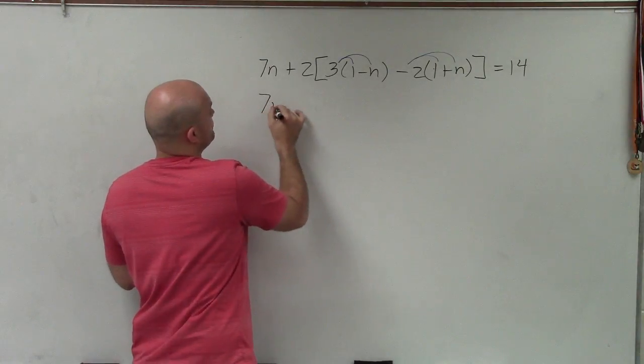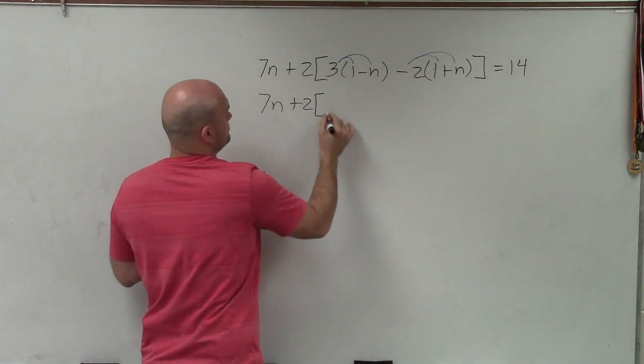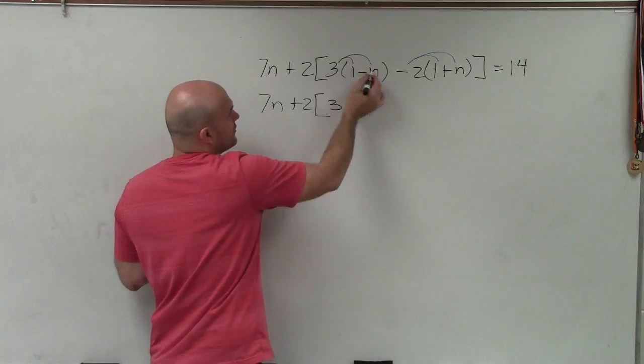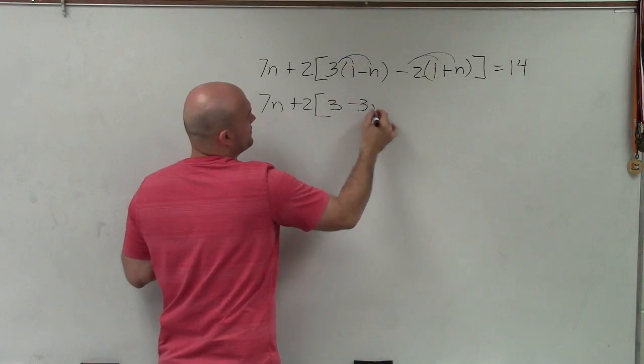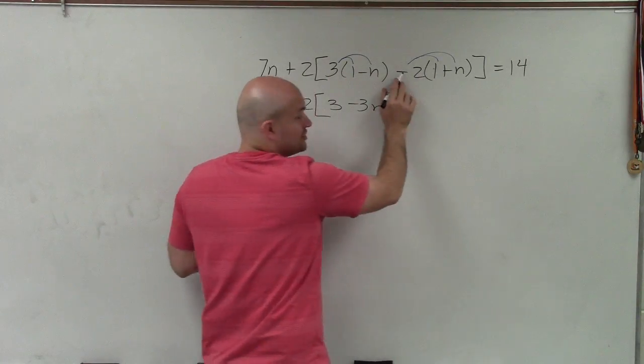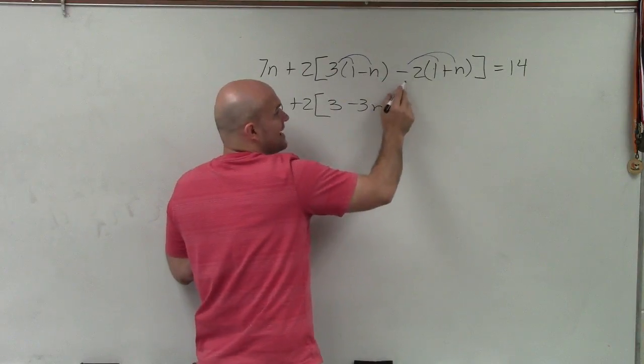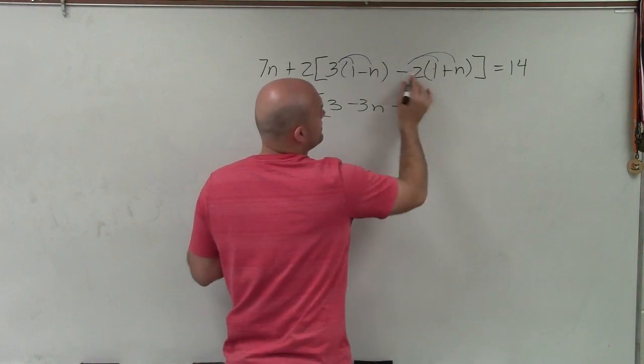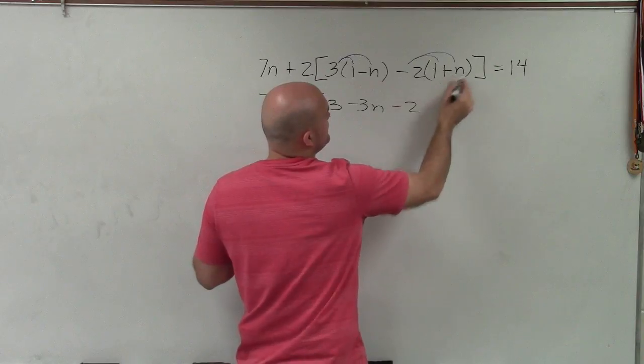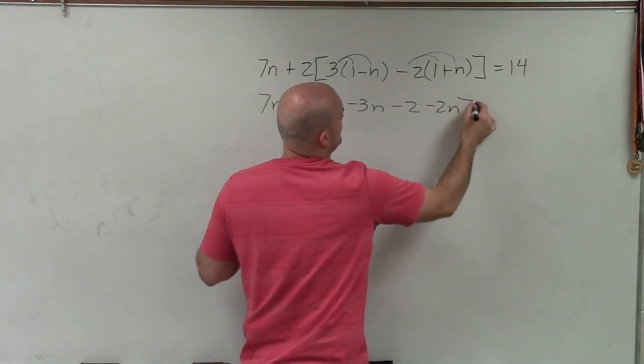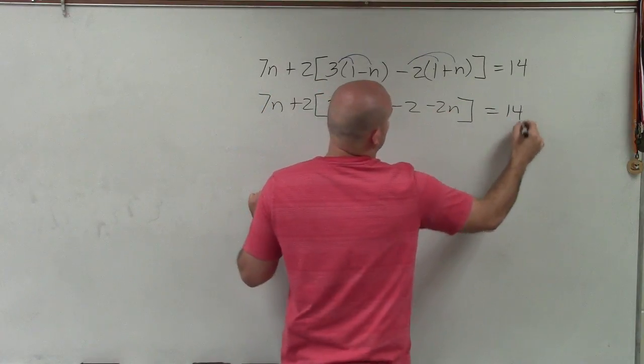So the first operation I can apply is going to be multiplication inside of my bracket. So therefore, I'll just rewrite everything. 3 times 1 is 3, 3 times negative n is negative 3n. Negative 2, make sure you bring the subtraction sign. Negative 2 times 1 is negative 2, negative 2 times n is going to be negative 2n equals 14.